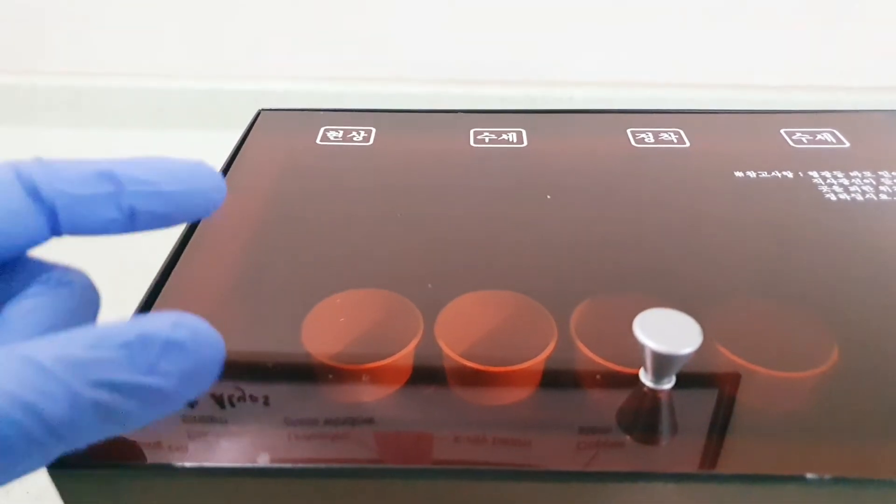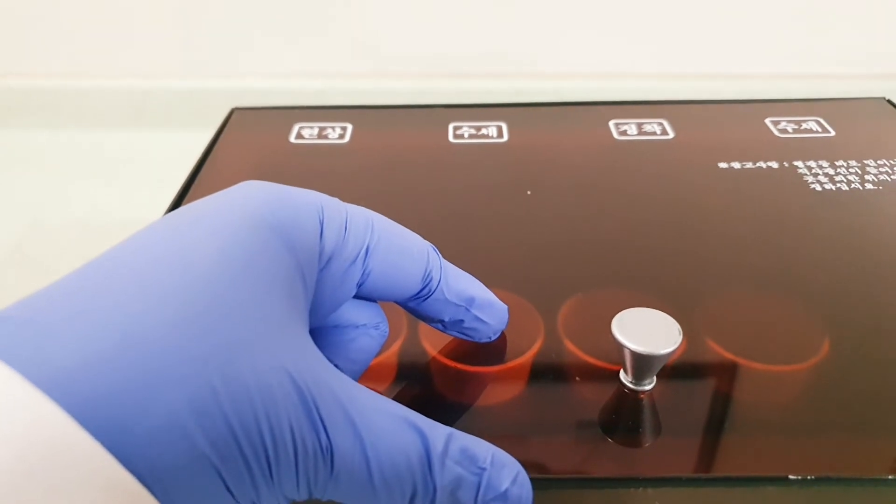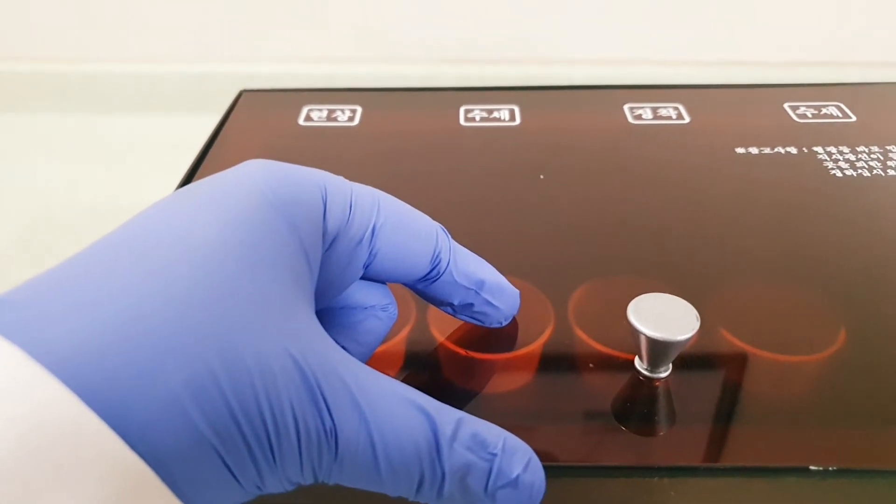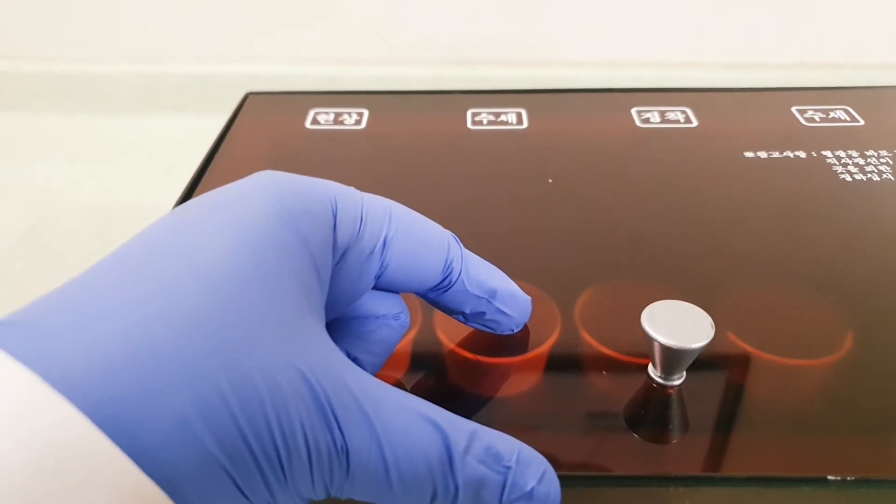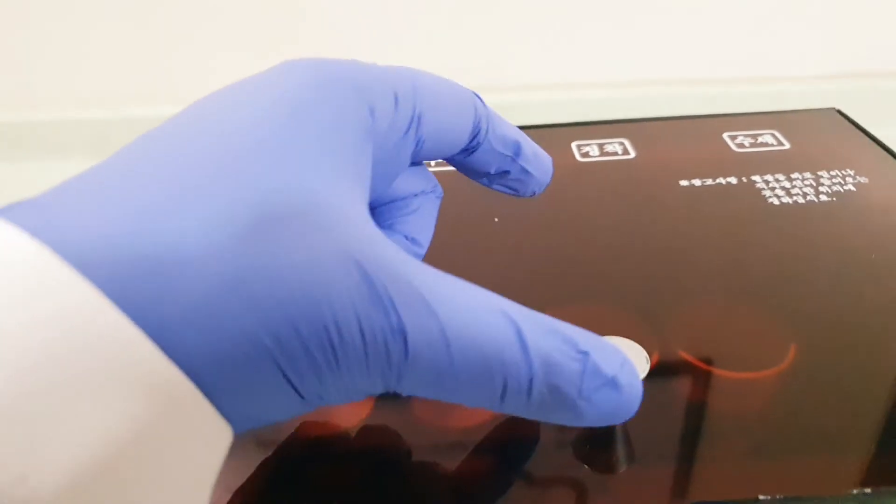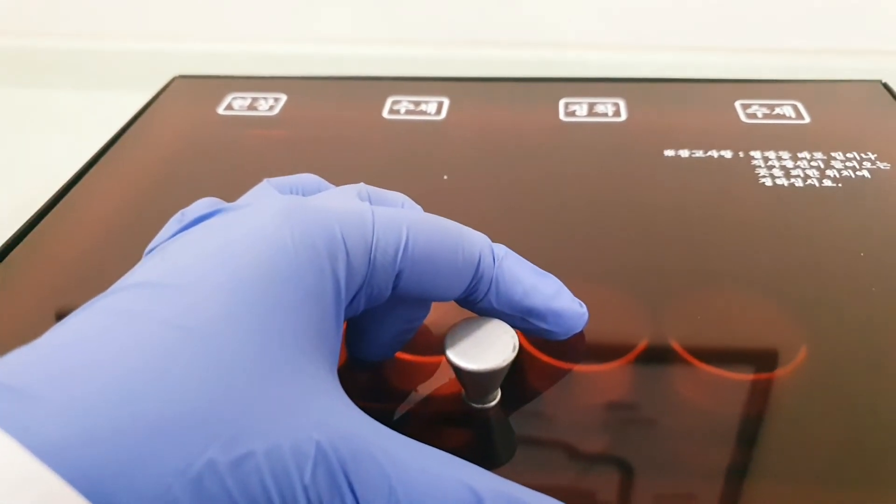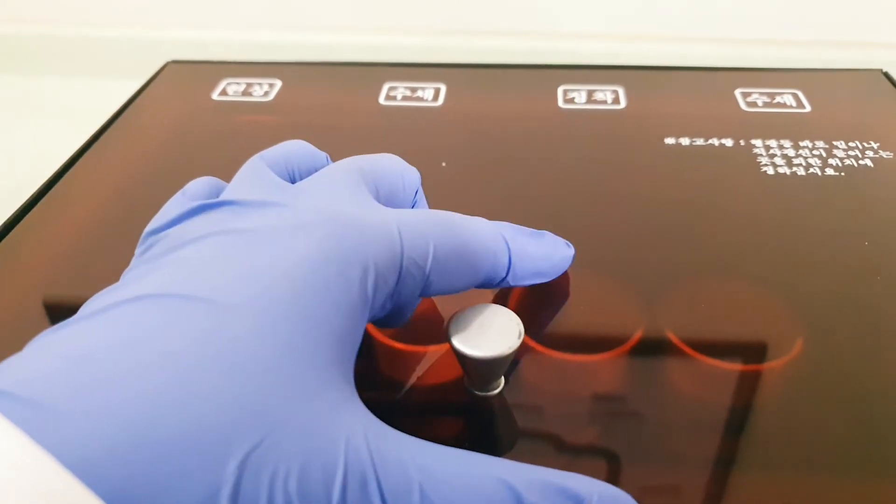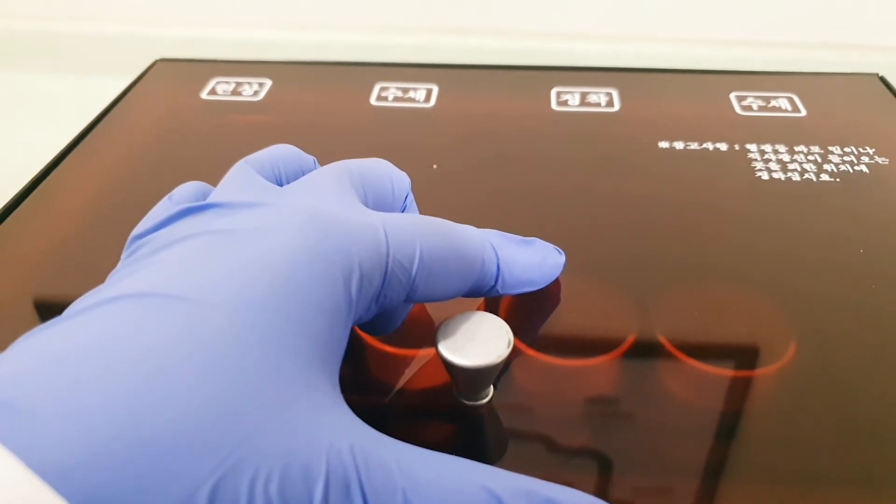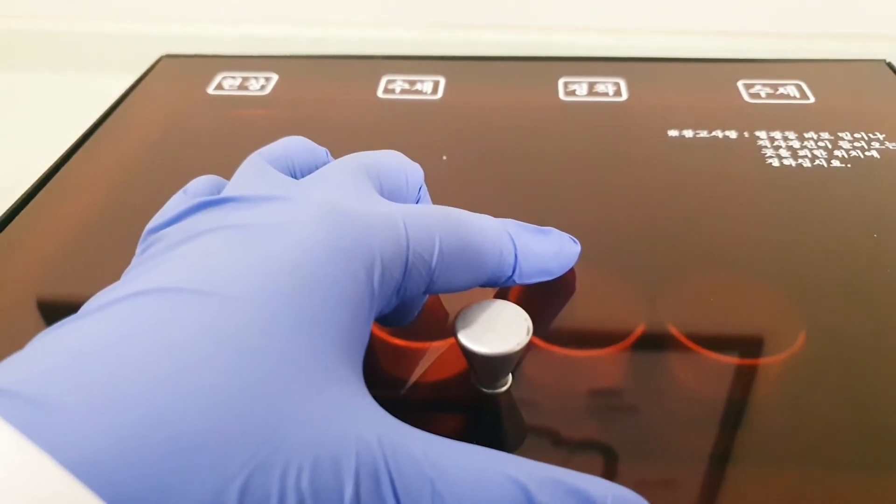Stop the developing process and rinse with water for five seconds. Then put the film into the fixing solution. In this solution, all the unexposed silver halide crystals will be cleared away.